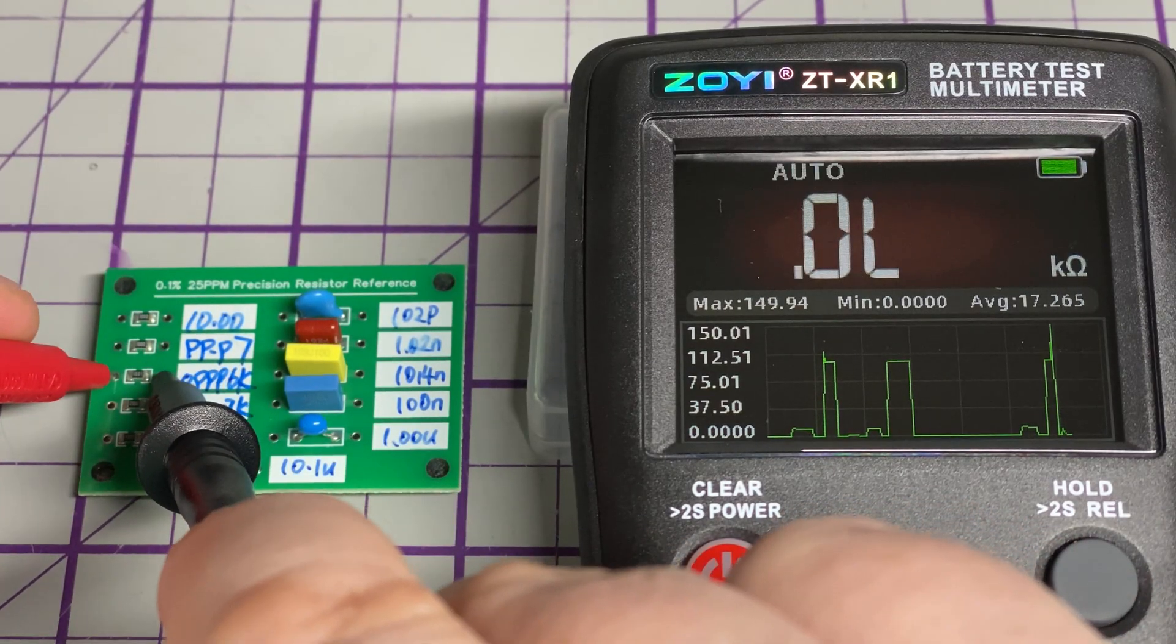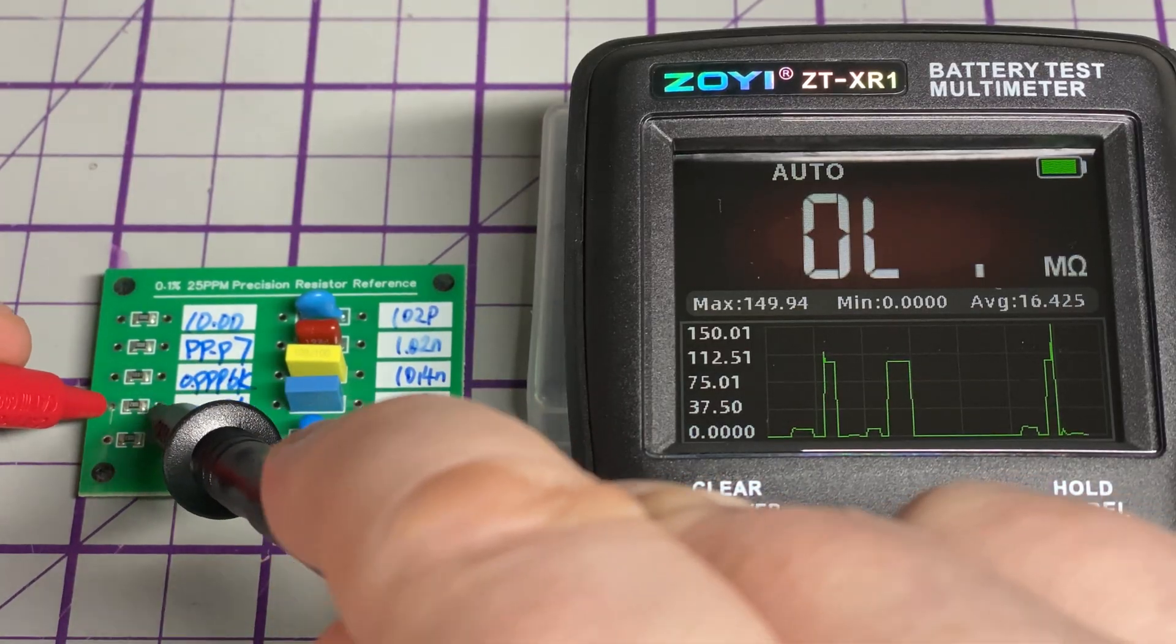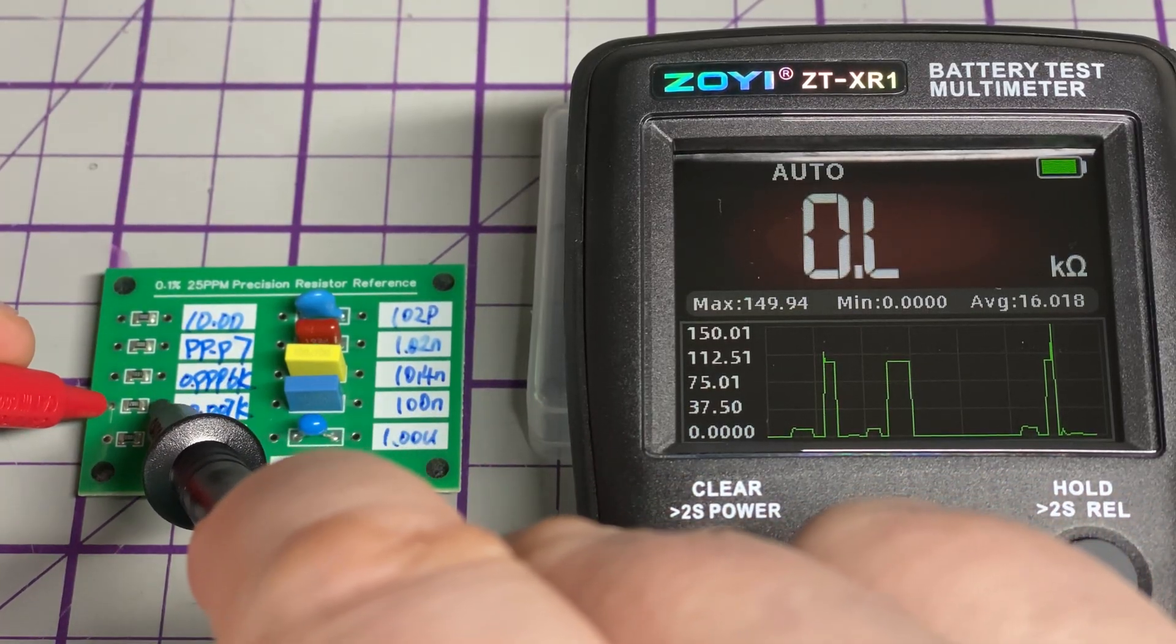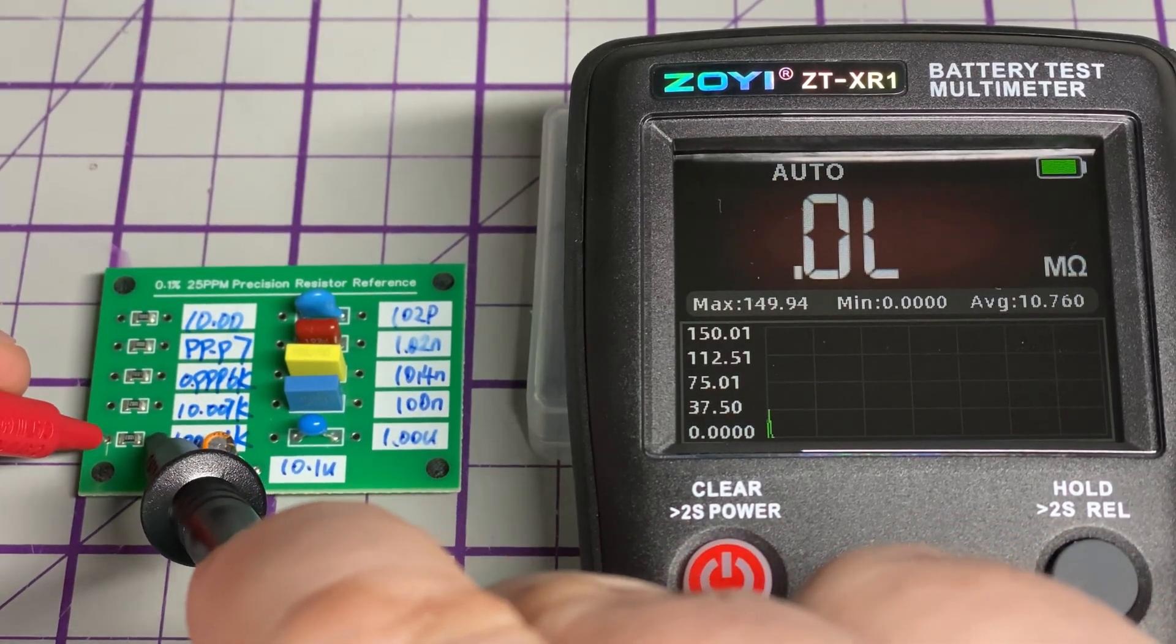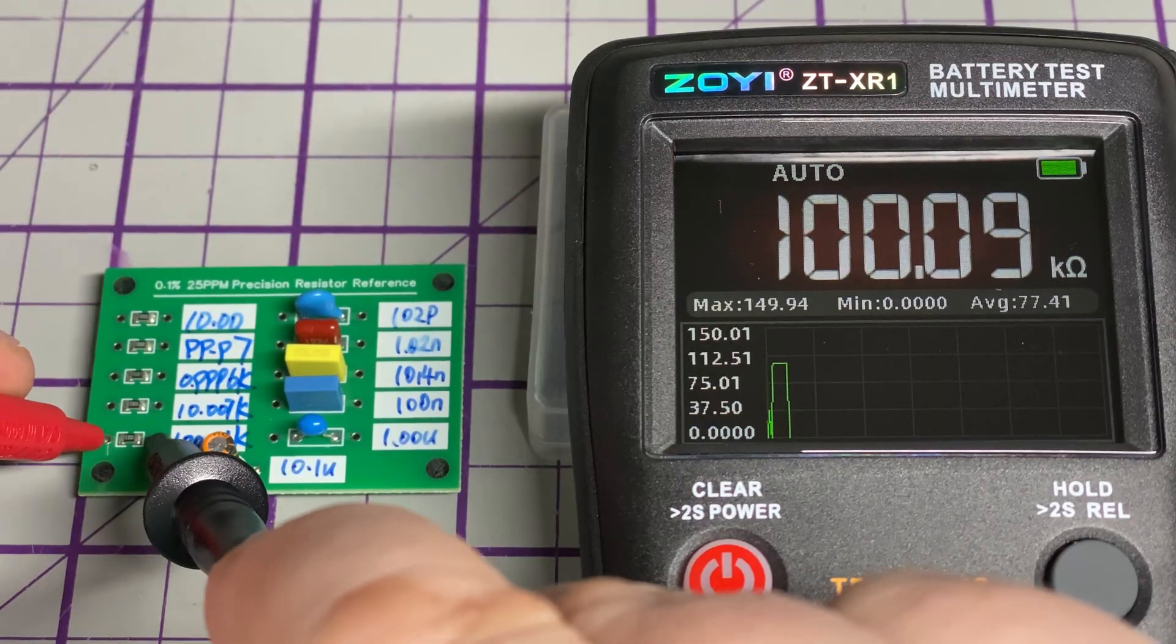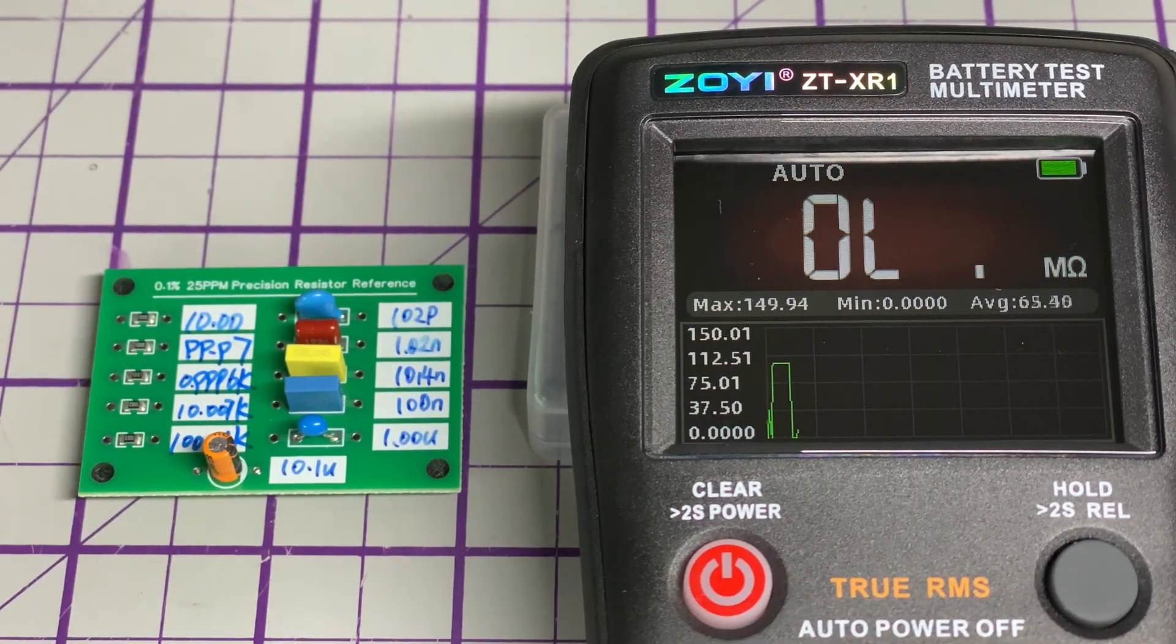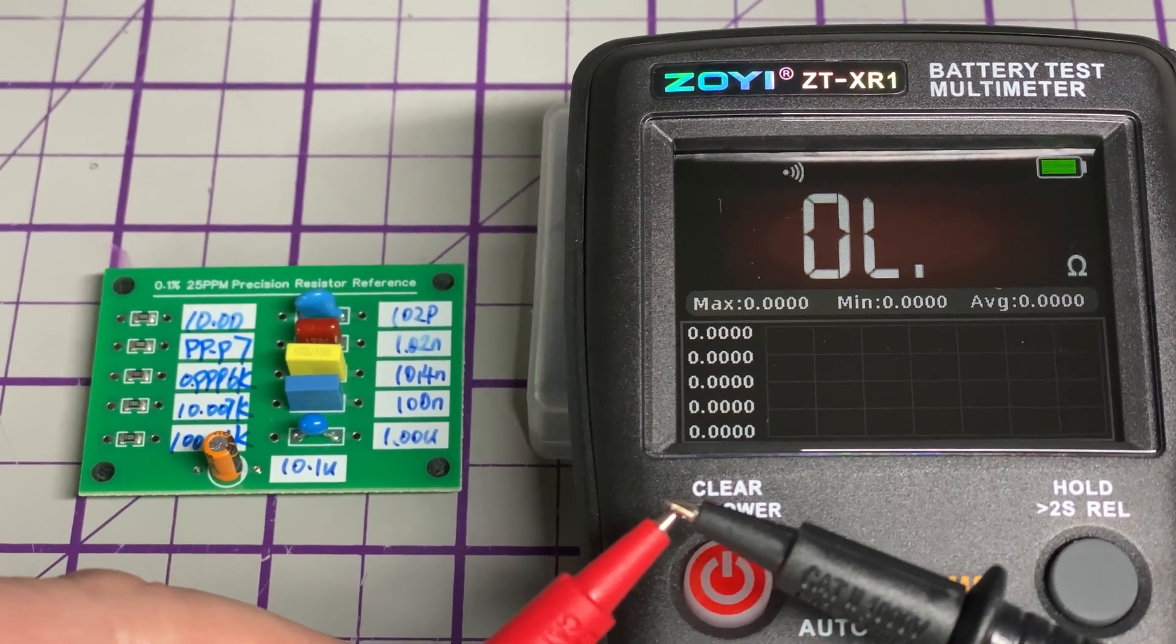We'll move to 1k. Yep, these aren't too bad to be honest. 10k and 100k. I actually thought these resistors would be a lot more out, should we say, but they're pretty close.